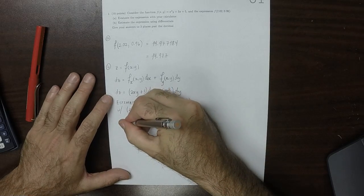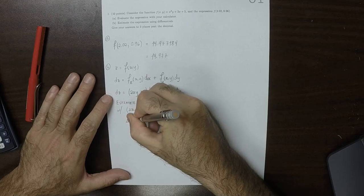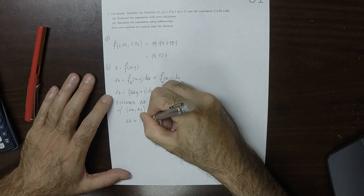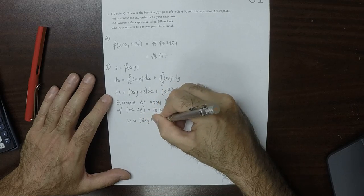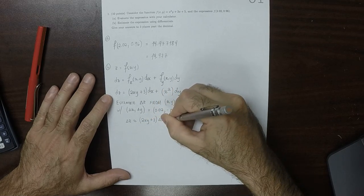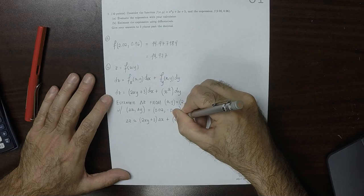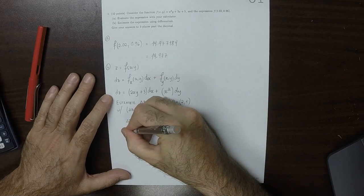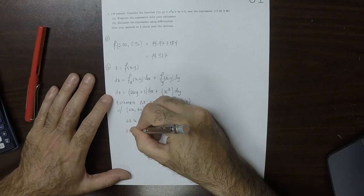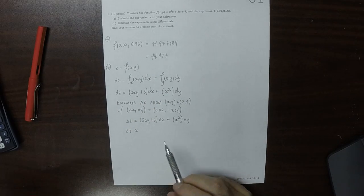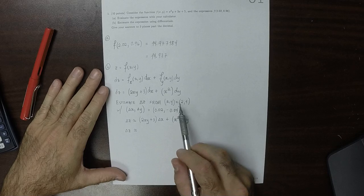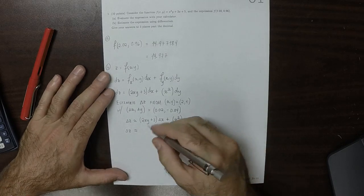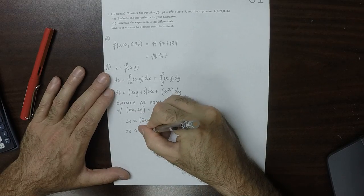So the approximation is delta z is approximately 2xy plus 3 delta x plus x squared delta y. So plugging in all of the bits, so 2 times 2 times 1 is 4 plus another 3 is 7.